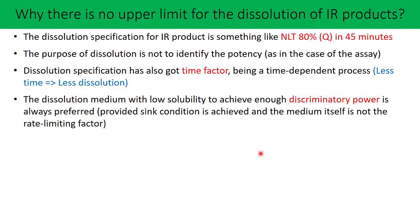You must have conducted the solubility of the API in different mediums ranging from pH 1.2 to 6.8. Based on your solubility results, it is always preferred to select the medium in which your active substance has a lower solubility. The lower the solubility, the better the discrimination that can be achieved, and discriminatory power is one of the very important characteristics of a dissolution test procedure.